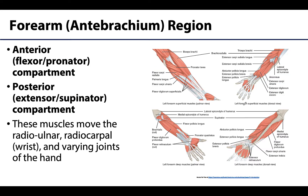There is a very similar organization in the forearm as what we saw in the arm, with an anterior flexor — and we're adding in another action here as well — as well as a posterior extensor compartment. We'll talk more about these specific actions in upcoming learning objectives.